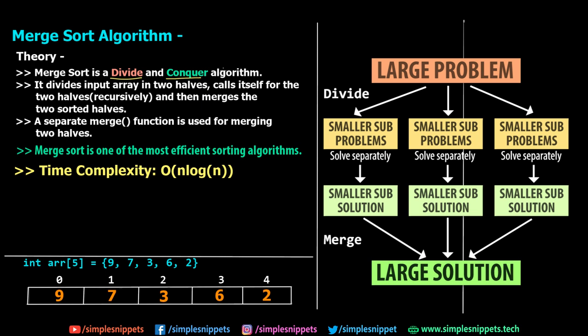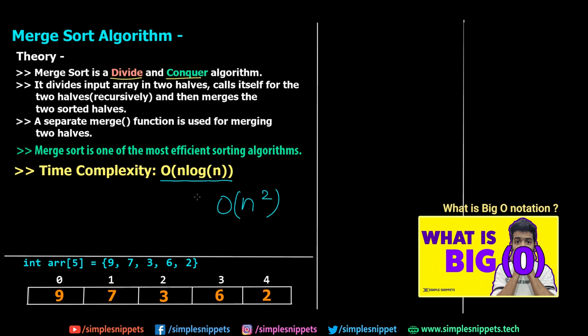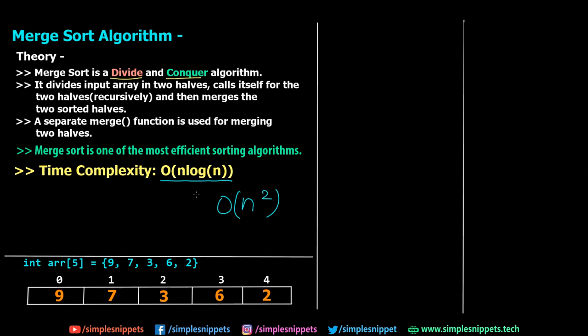This helps us achieve a high level of efficiency. The time complexity of Merge Sort is O(n log n). The first three sorting algorithms — Selection, Insertion, and Bubble Sort — had a time complexity of O(n²), which is very inefficient. Merge Sort's O(n log n) complexity is significantly more efficient than O(n²), and this divide and conquer methodology is what makes it one of the most efficient sorting algorithms.